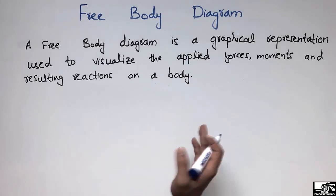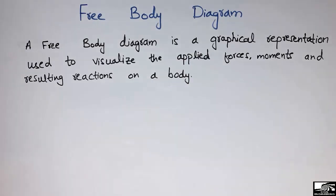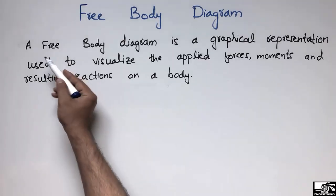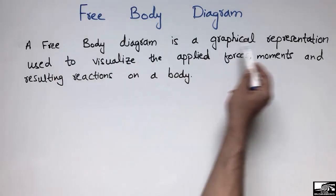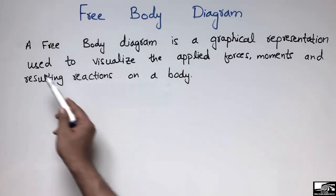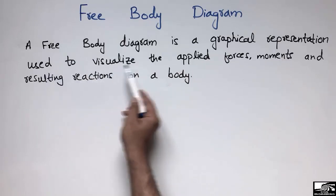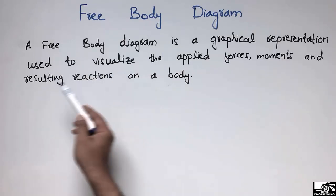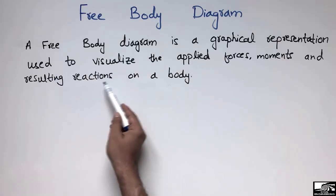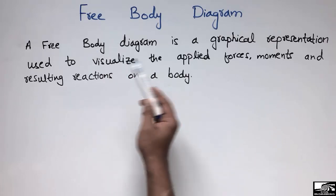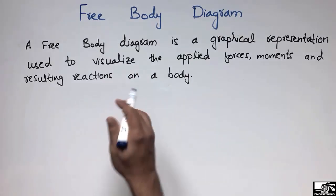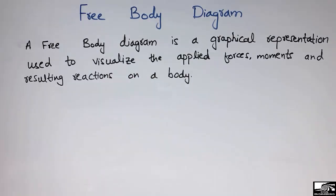The free body diagram can be defined as: a free body diagram is a graphical representation used to visualize the applied forces, the moments, and resulting reactions on a body. I will explain this definition with the help of some examples to clarify for you guys.